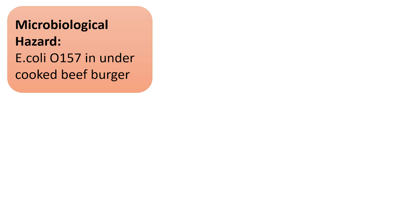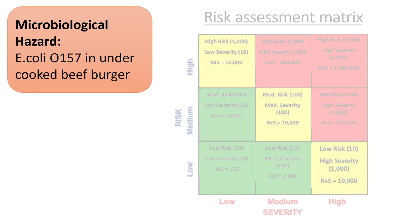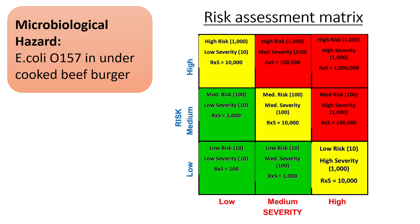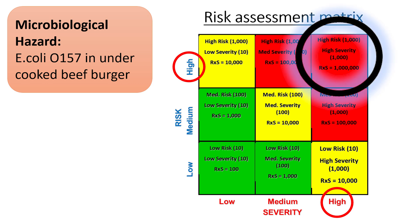Now let's take another example. If somebody orders a beef burger and eats it undercooked, there is a hazard of having bacteria like E. coli — specifically E. coli O157 — in the beef burger. Since E. coli has been associated with beef burgers historically and is a very common occurrence, the likelihood or risk is high. The severity is also high because E. coli O157 can be a very serious illness-causing bacteria. So this will fall at the high-high coordinate of the risk assessment matrix.